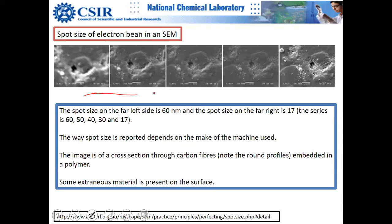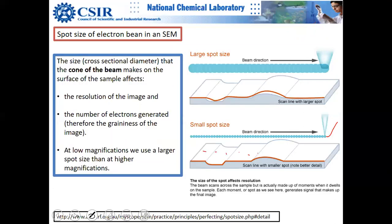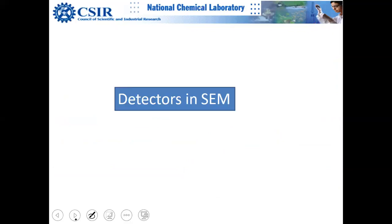Decreasing spot size along this series — from 60 nanometers to 50, 40, 30, and 17 nanometers — the image at 17 nm spot size looks the crispest compared to the others. This proves we need smaller spots for better resolution. Resolution in SEM depends on spot size as well as sample type and topography.